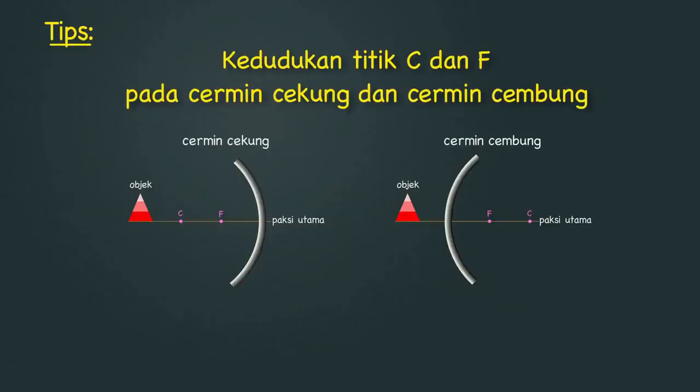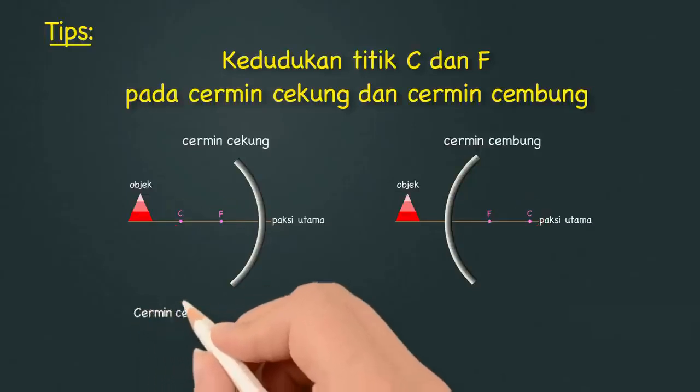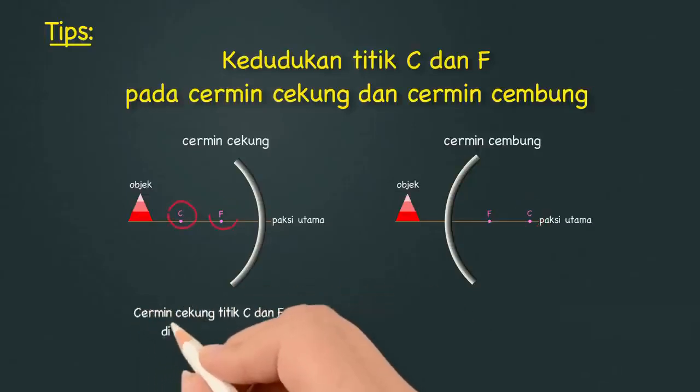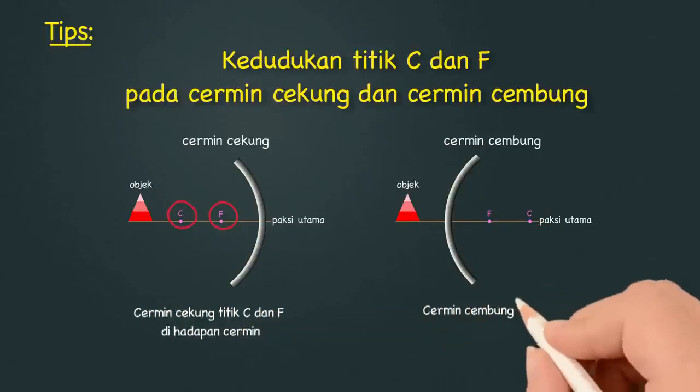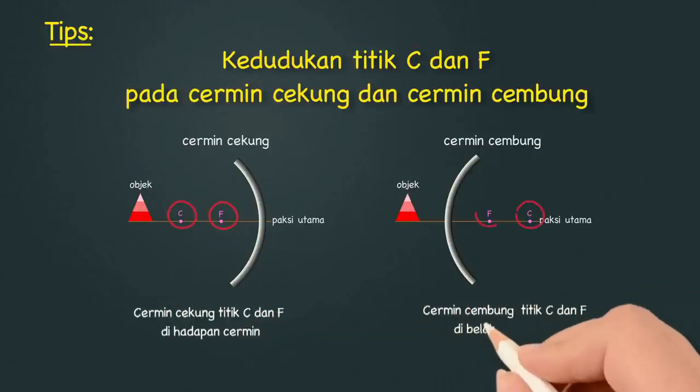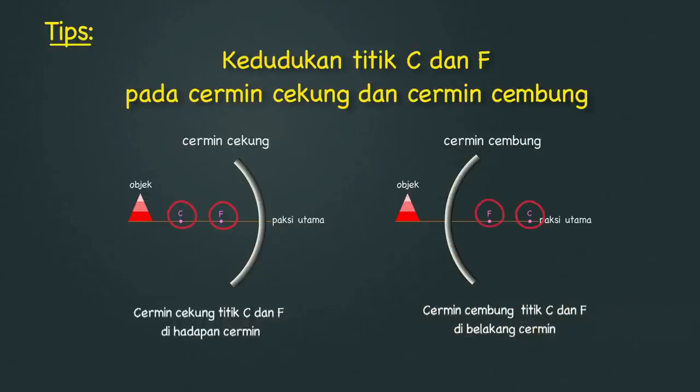Tips: Para pelajar sering keliru dengan kedudukan titik C dan F untuk cermin cekung dan cermin cembung. Bagi cermin cekung, titik C dan F berada di hadapan cermin. Manakala bagi cermin cembung, titik C dan F berada di belakang cermin tersebut.